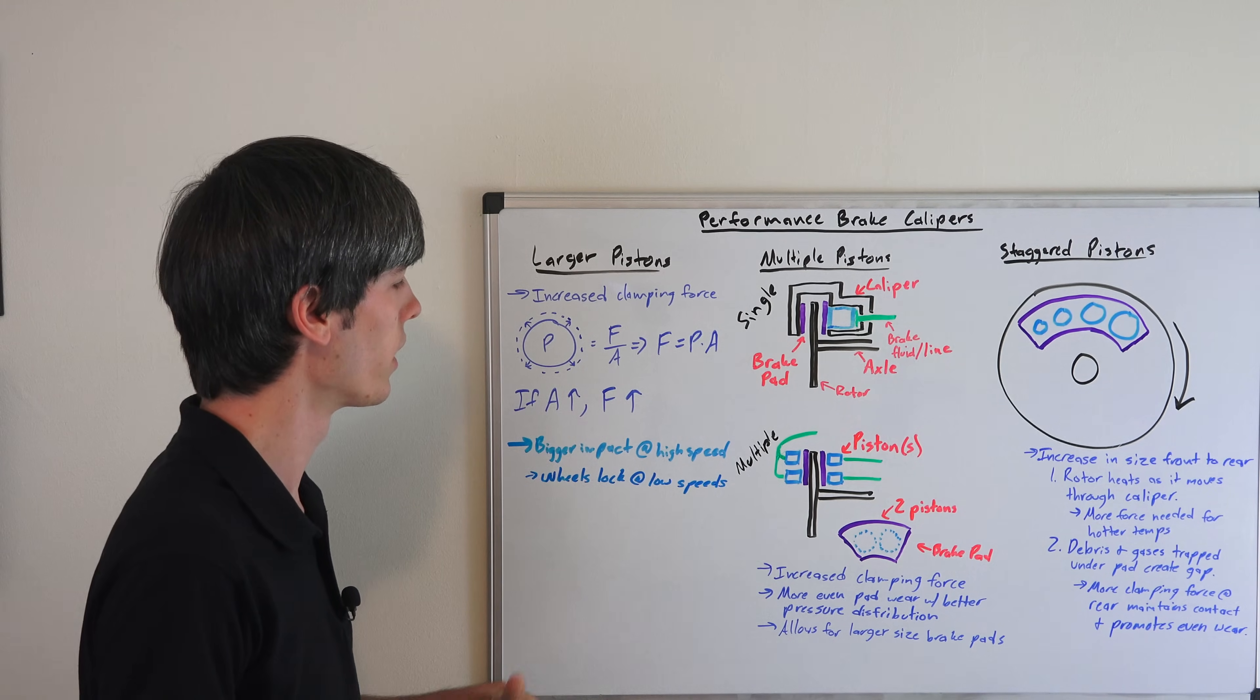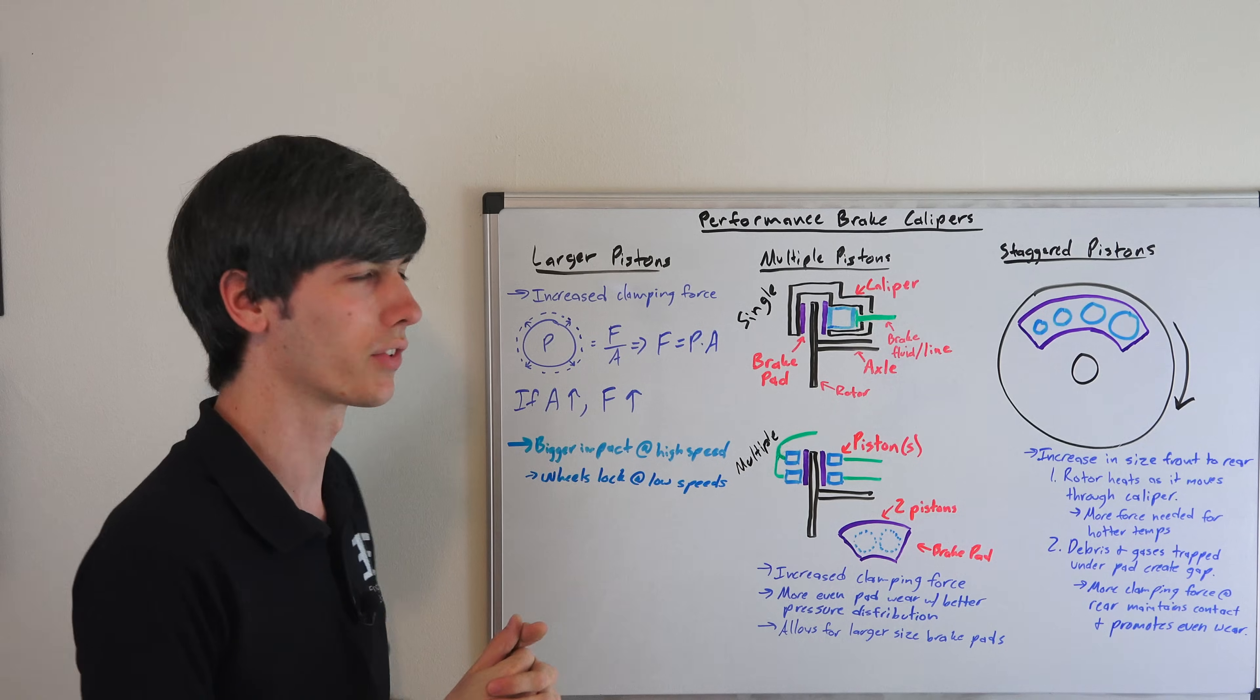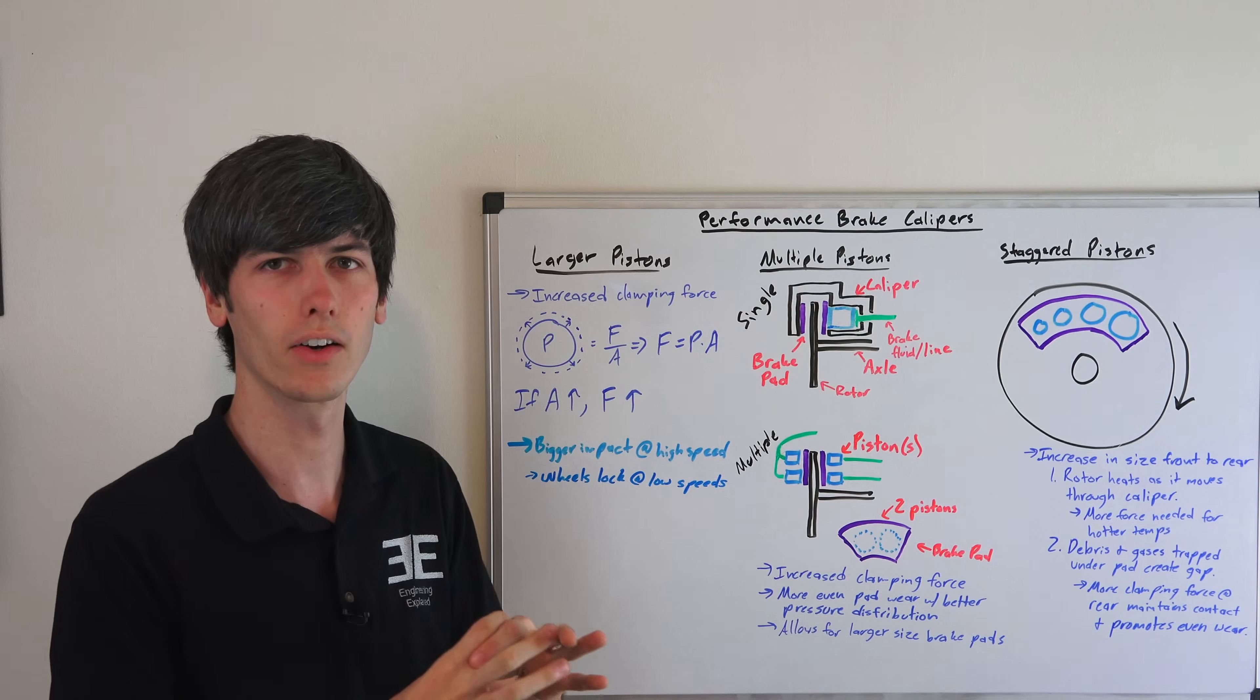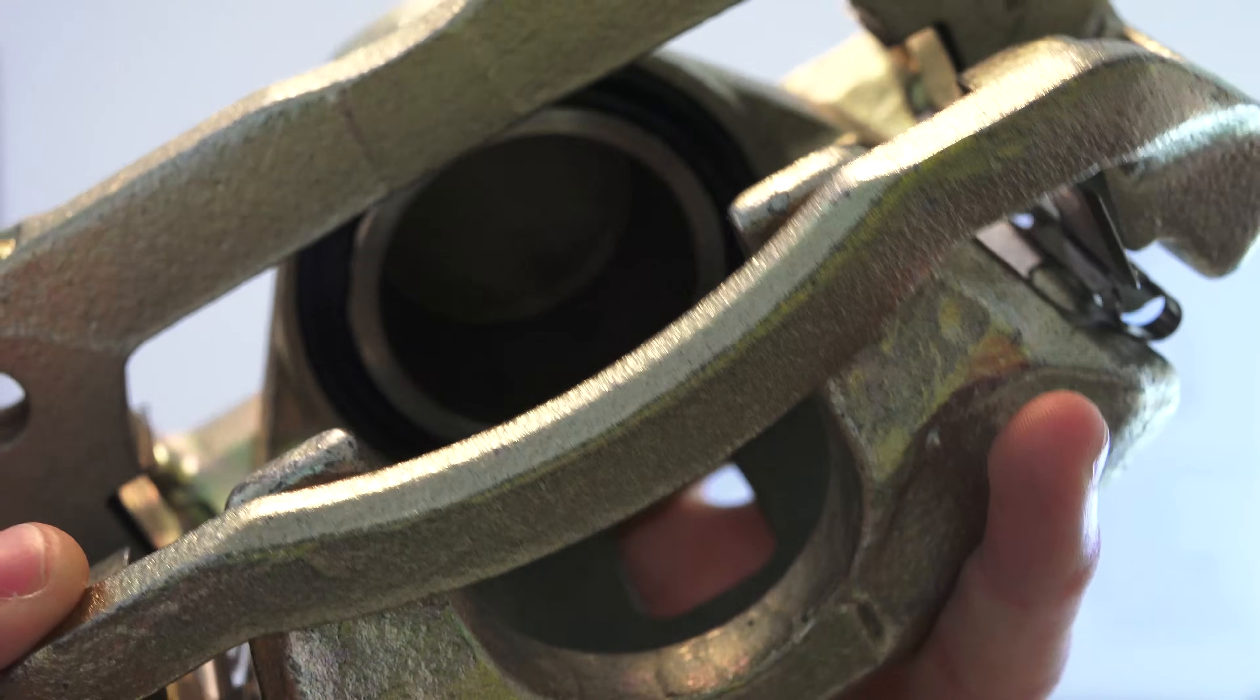And so at higher speeds it's going to be more challenging or you need more force. So you know you're going at 150 miles an hour, you want to slow down really good, you're going to want a nice large piston on there so you can slow down the vehicle a good amount.